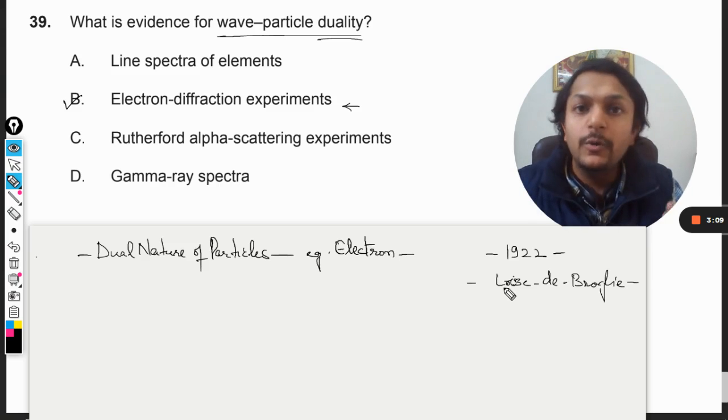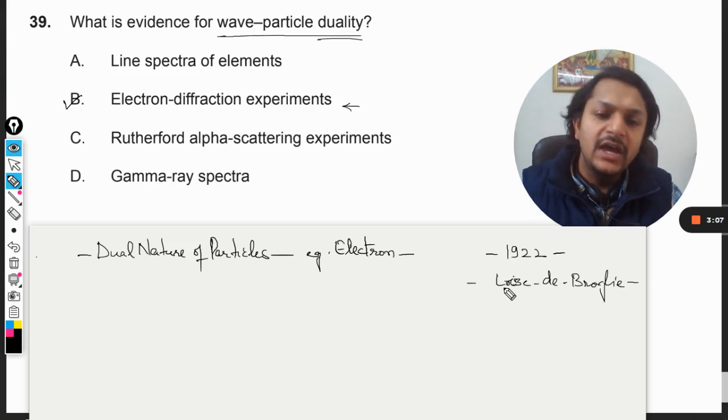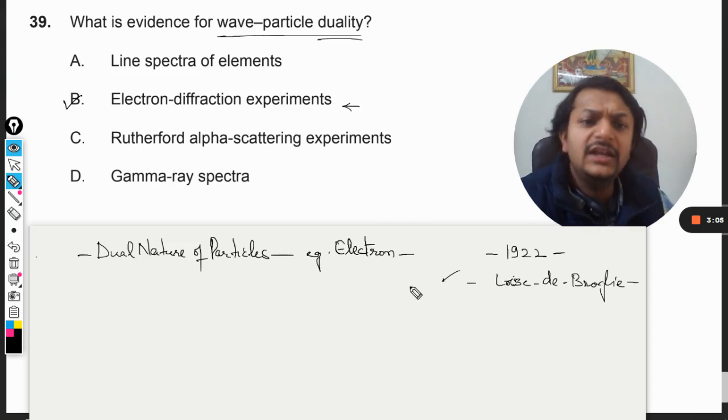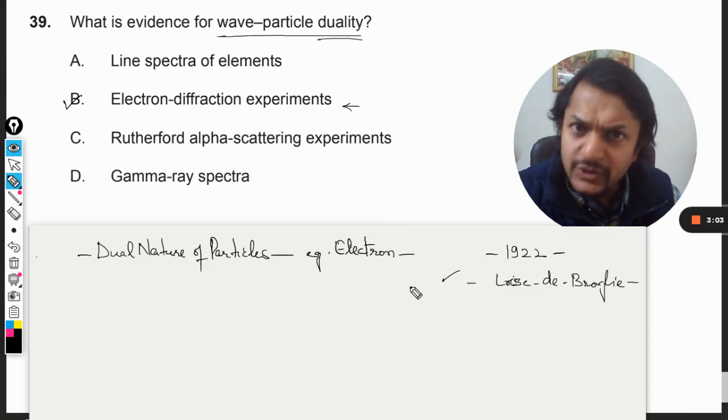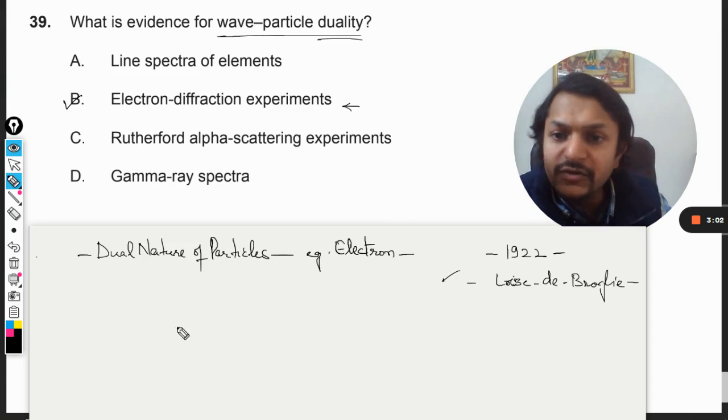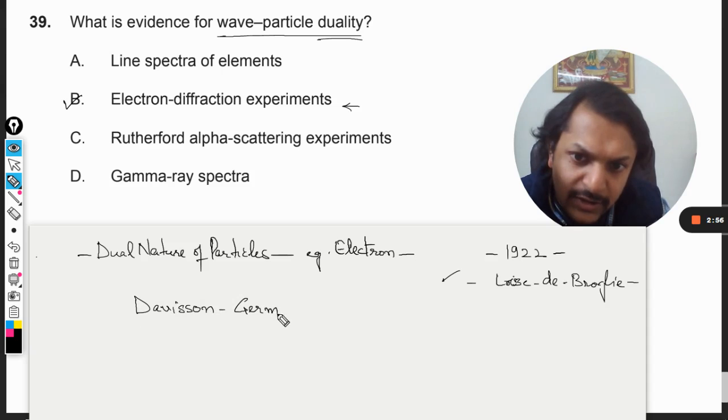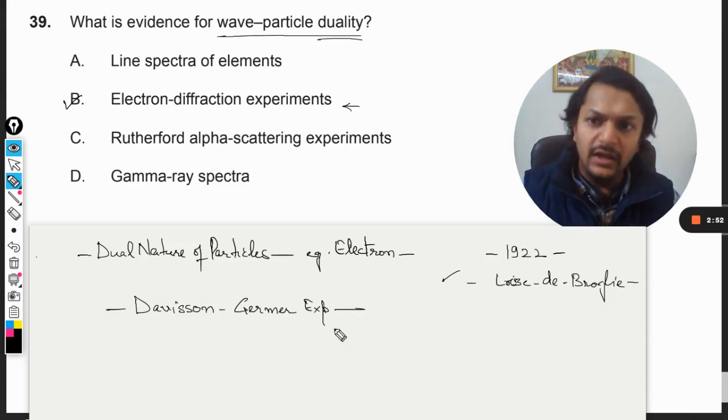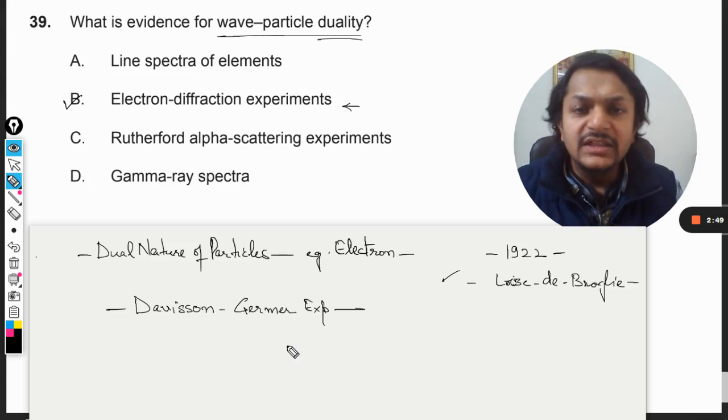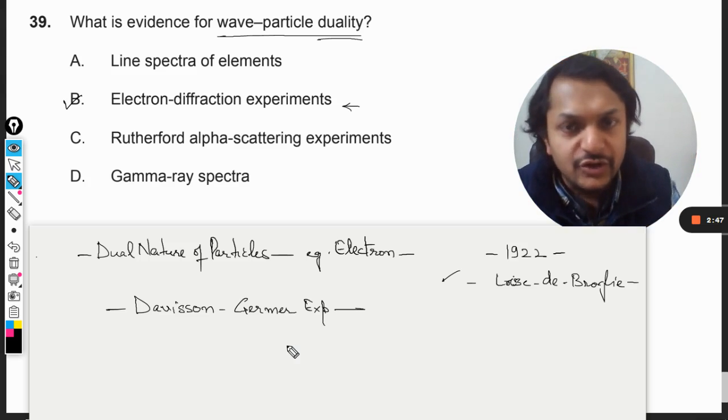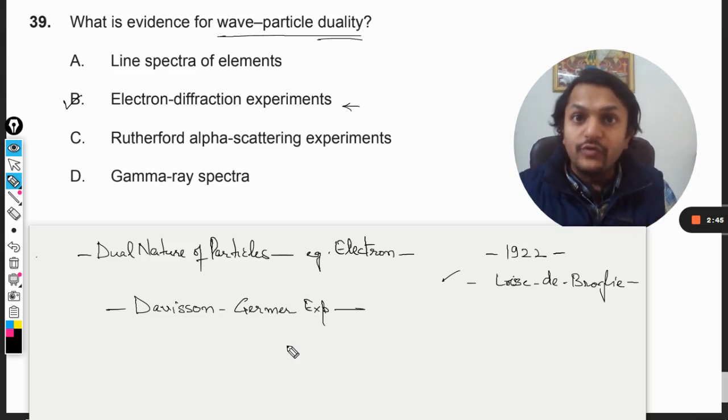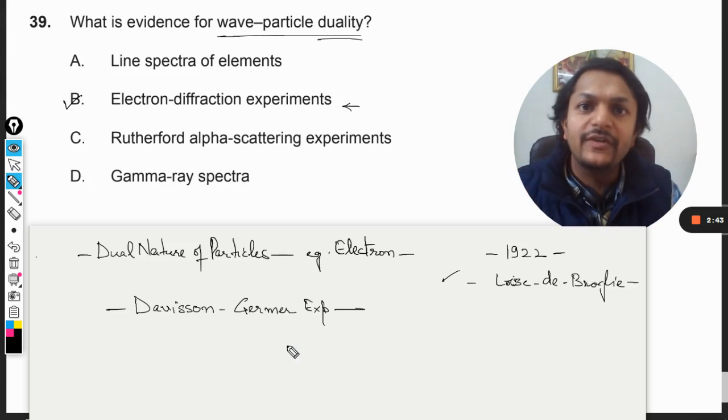It was just a theory and he gave explanations, but there was one experiment done by two scientists - the Davison-Germer experiment, a very famous experiment. In this experiment they used a beam of electrons and proved that beams of electrons are exhibiting the properties of diffraction.